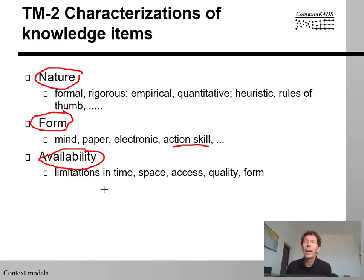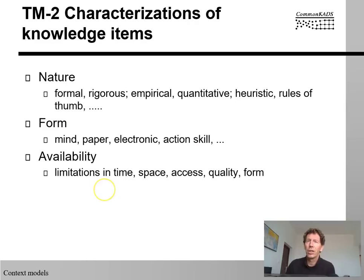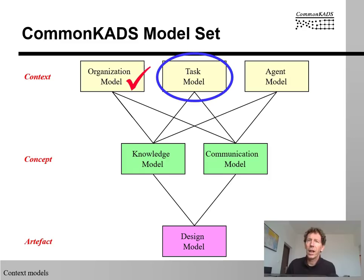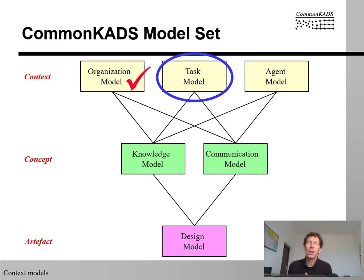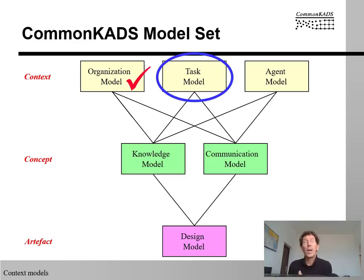These are the ways in which you have to characterize knowledge items in Worksheet 2 of the task model. That completes the task model — just two worksheets and very concrete ones. You can see that we are really progressing into the land of much more structured items. We didn't have to make up any items because we had already identified all of the tasks, so we could almost read off the dependencies and conditions from the diagrams we were drawing, and similarly for the knowledge items — we had already identified them and all we had to do was describe them in a very structured way.